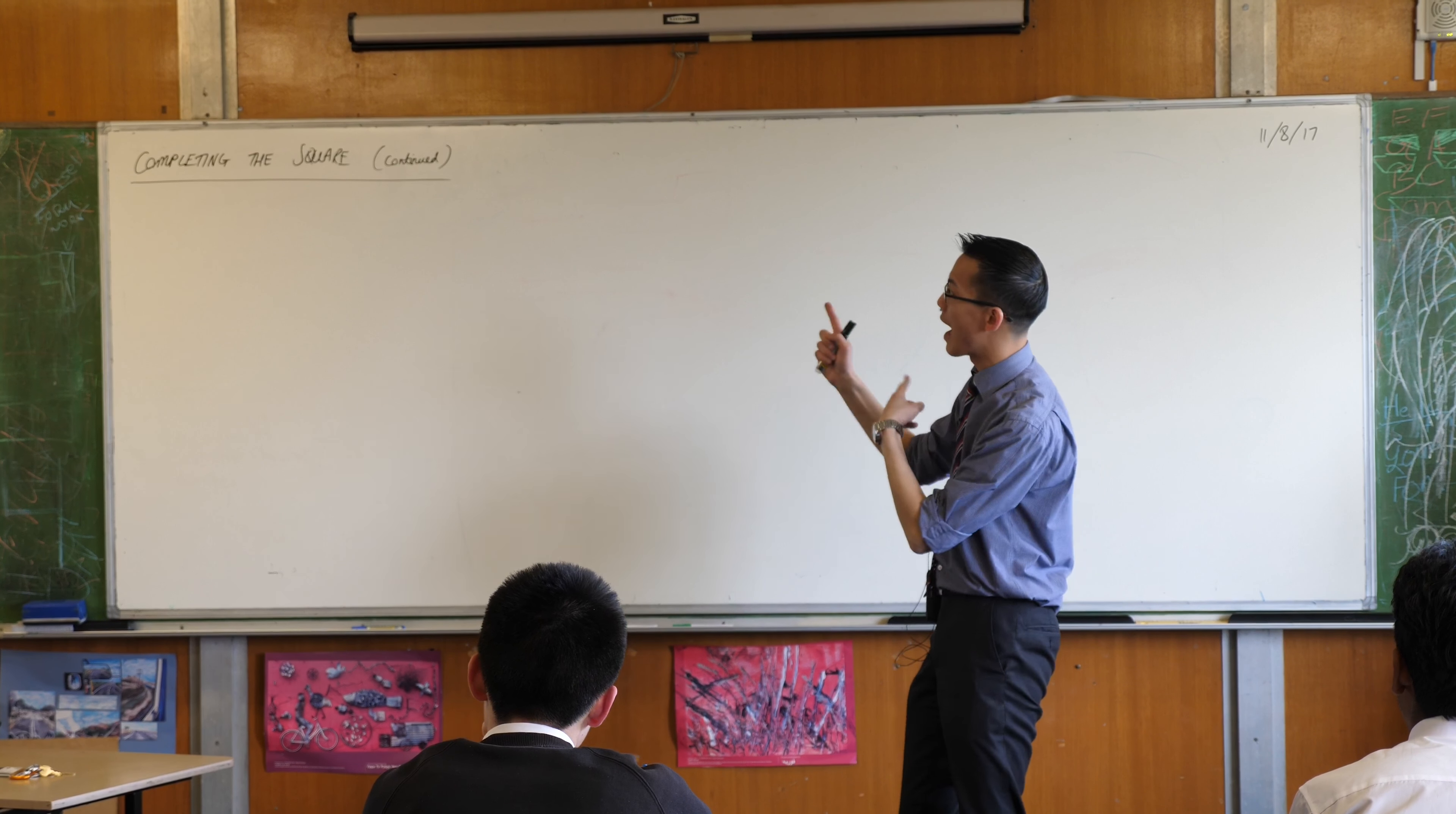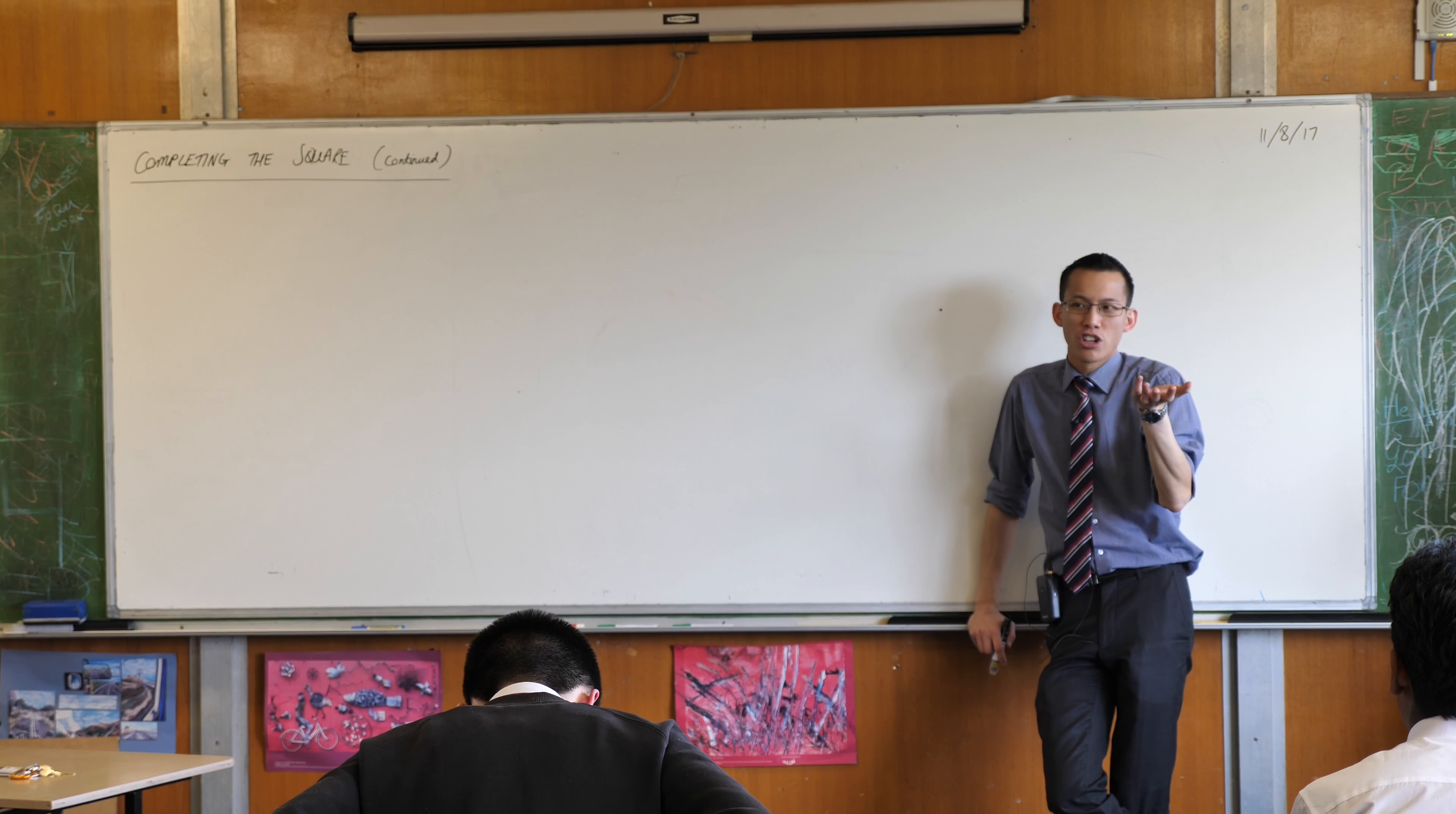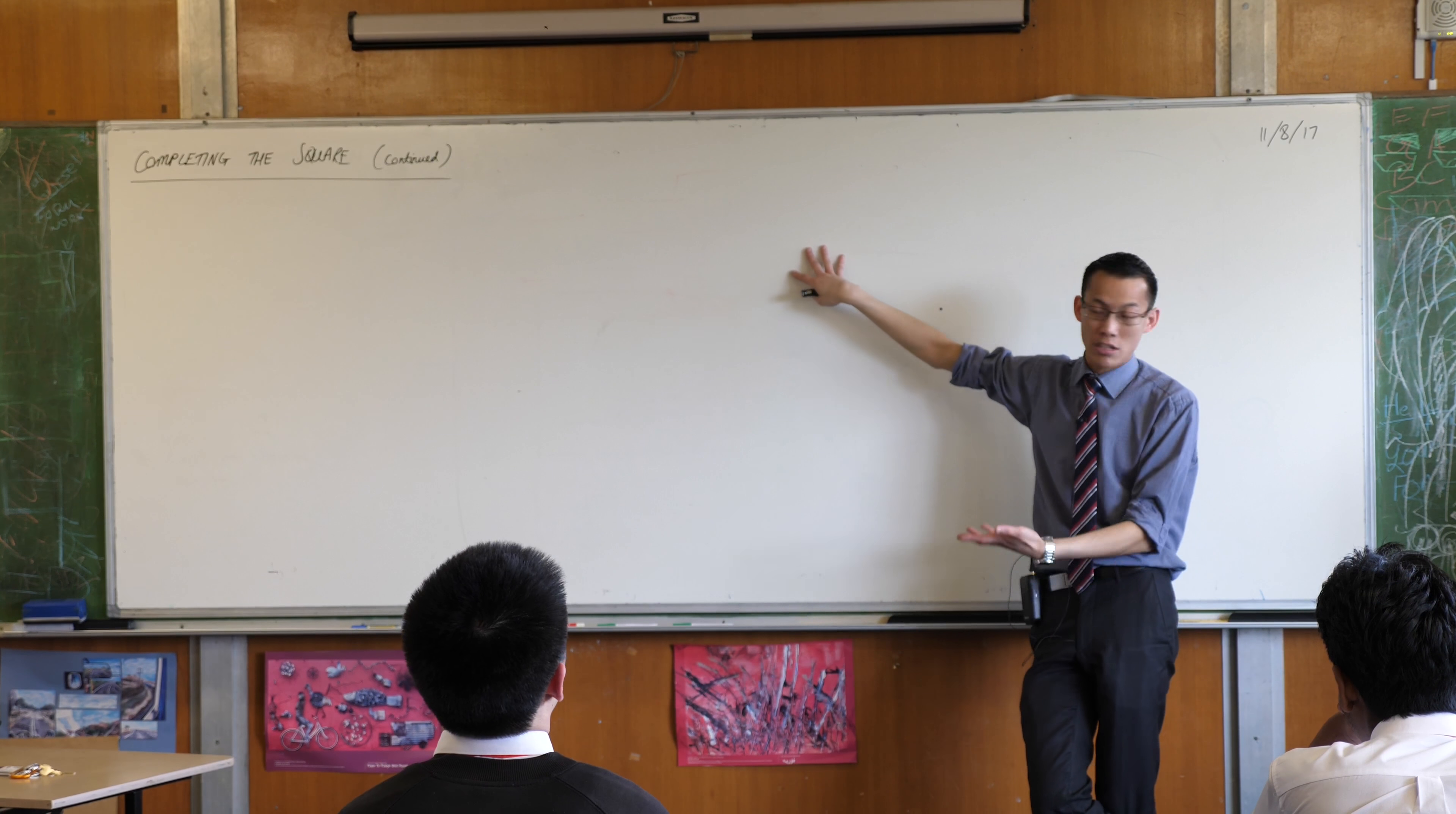The big advantage that completing the square has over factorization is, plainly sometimes you just can't factorize. How long are you going to sit there trying to guess like surds and stuff like that? It's not going to happen. So completing the square just gets those out effortlessly, which is really nice.